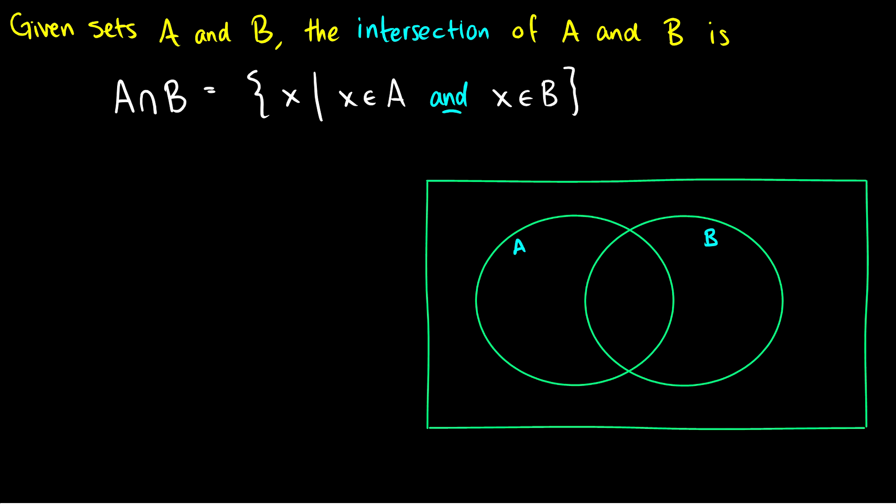So for instance let's say that A has 1, 2, and 3 in it and B has 3, 4, and 5 in it. Then the intersection of A and B is where they overlap. It is this section here containing the 3. So you want to look at common elements.